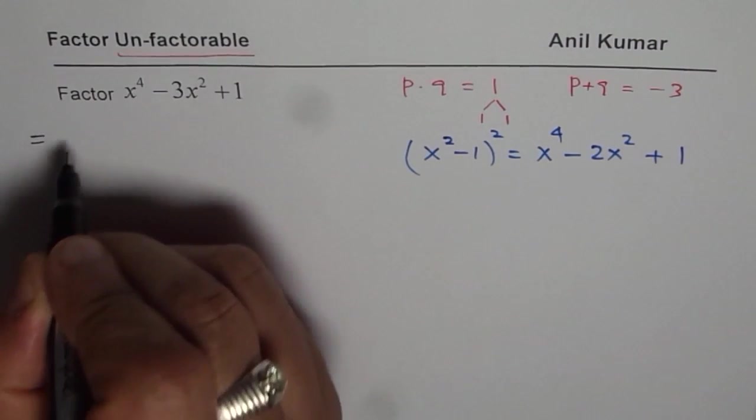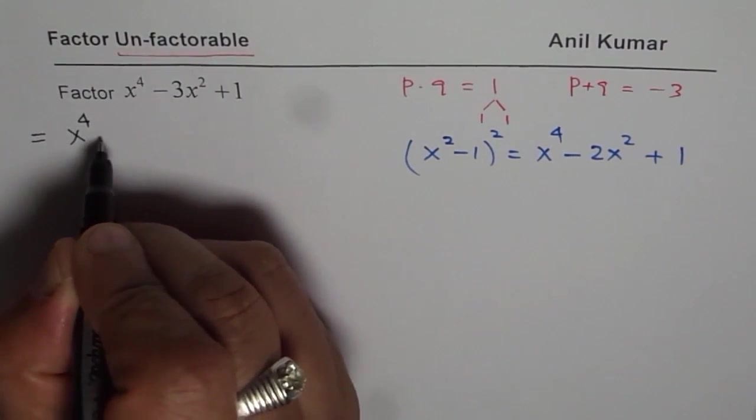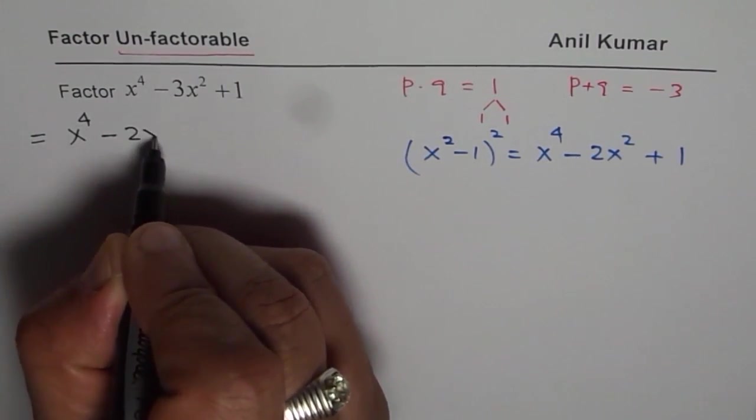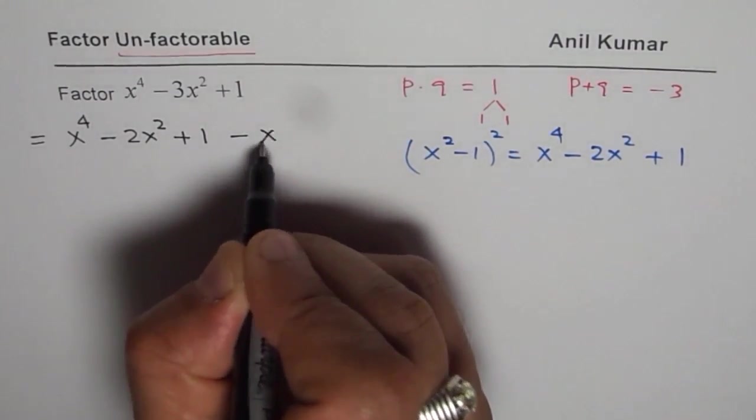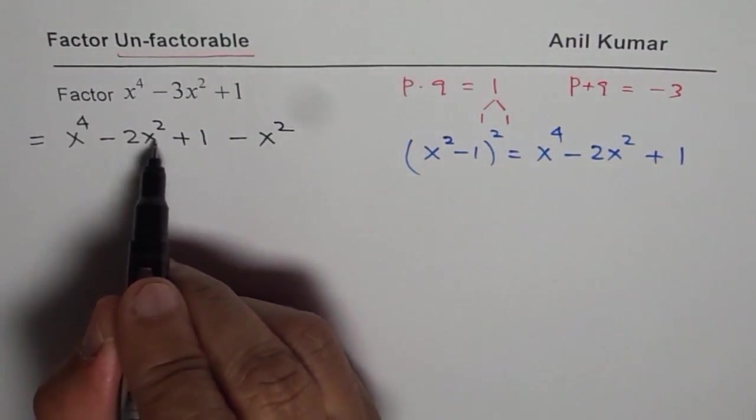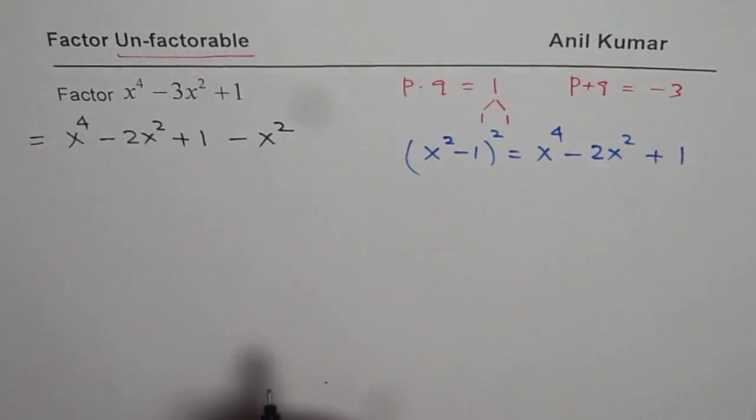So the trinomial could be written as x^4 - 2x^2 + 1 - x^2. Minus 2x^2 minus x^2 is indeed 3x^2 with a minus sign, correct?